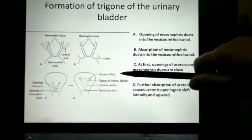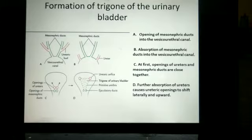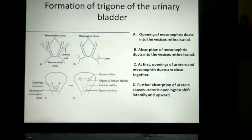The whole bladder is developmentally endodermal — except the trigone. It is endodermal because it develops from the vesico-urethral canal, which is part of the primitive urogenital sinus. This primitive urogenital sinus is part of the cloaca, and the cloaca is part of the hindgut. Since the hindgut is endodermal in origin, the vesico-urethral canal and thus the urinary bladder is endodermal in origin.